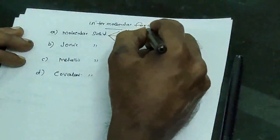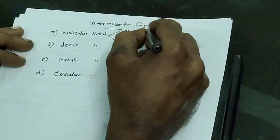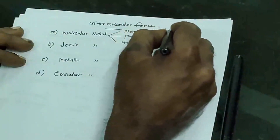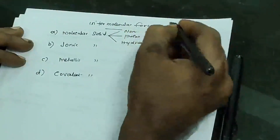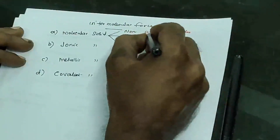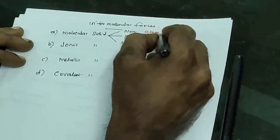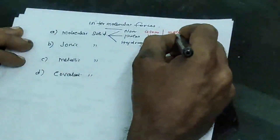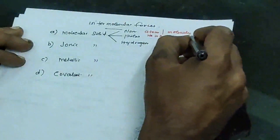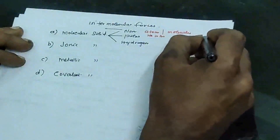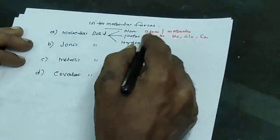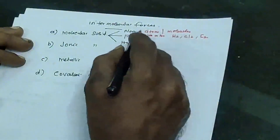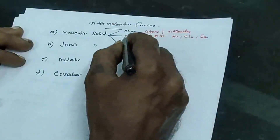In non-polar molecular solids, the constituents may be atoms or molecules. Atoms means helium or argon; molecules means hydrogen, chlorine, or iodine. Here the force of attraction is London or dispersion force, that is a weak force of attraction.